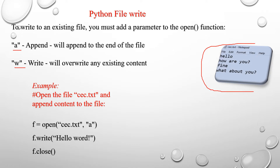This is my existing file, named cec.txt. The file contents are: first line is 'allow', second line is 'arw', third line is 'file', and fourth line is 'what about you'. I am declaring a file variable or object f equal to open, with the first argument as the file name cec.txt and mode as append mode.